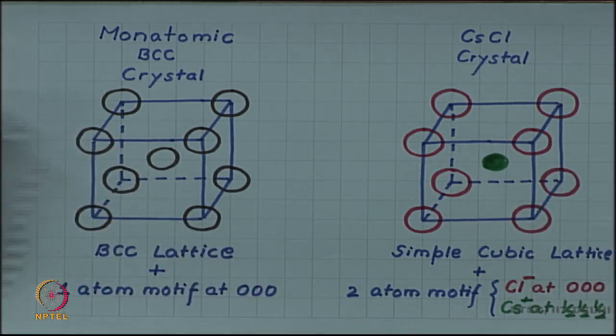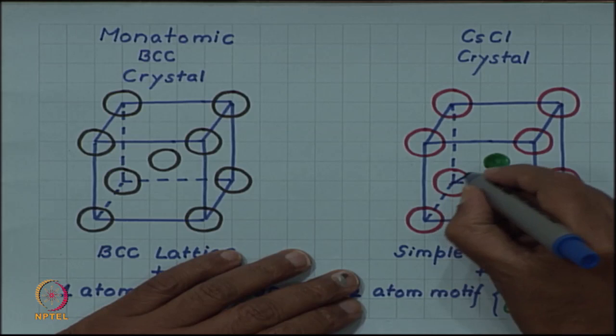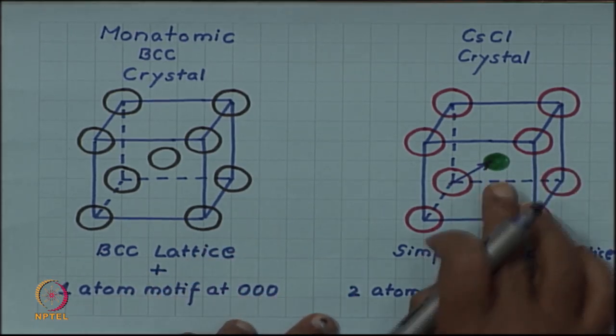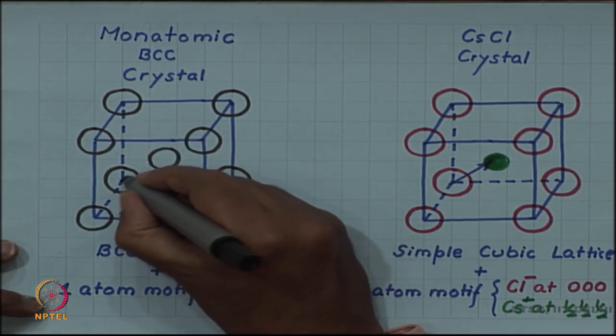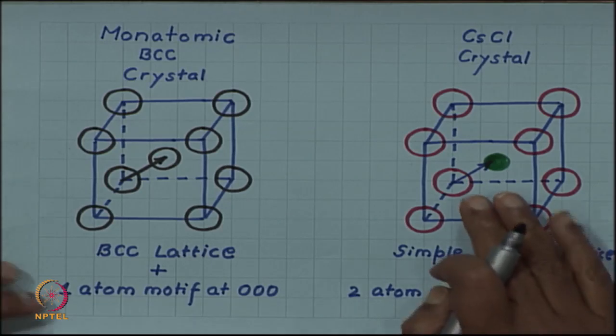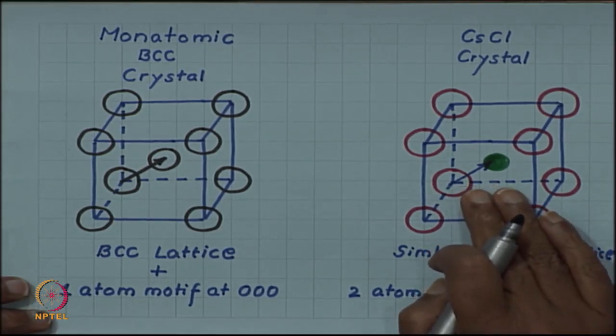This is no more a lattice translation vector. This is not a translational symmetry. This was a translational symmetry or a lattice translation of monatomic BCC, but this is not a lattice translation in caesium chloride.